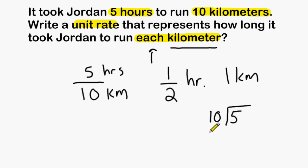10 cannot fit into 5, so we can write a 0 at the top. 0 times 10 is 0, and 5 take away nothing is 5. What we can do is say that our answer is 0 and 5 tenths.